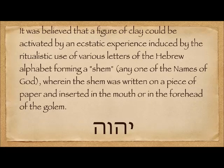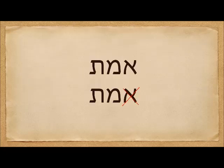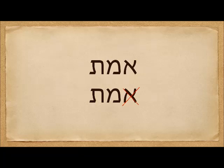It was believed that a figure of clay could be activated by an ecstatic experience induced by the ritualistic use of various letters of the Hebrew alphabet forming a Shem — any one of the names of God — wherein the Shem was written on a piece of paper and inserted into the mouth or forehead of the Golem. They would use Yud-Heh-Vav-Heh as a sacred name to animate this figure of clay. Another word used is emet, which means truth. If you were trying to deactivate the Golem, you could take the aleph off emet, leaving just the word met, which means dead, and the Golem would cease functioning.